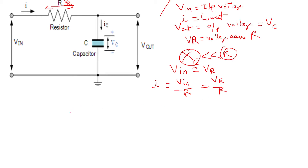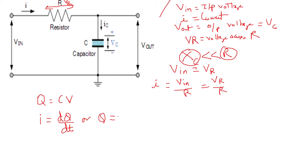From capacitor theory, we know that charge Q equals capacitance C into voltage V. We also know that I equals dQ/dt for a capacitor — that is, the rate of change of charge with respect to time. This same expression can be written as Q equals the integration of I dT.